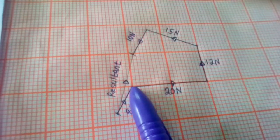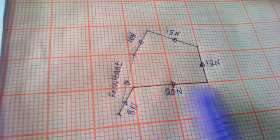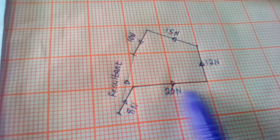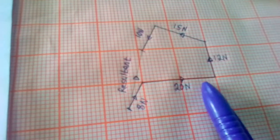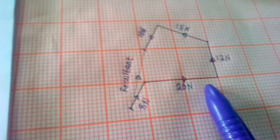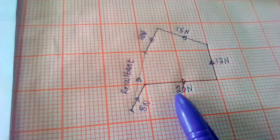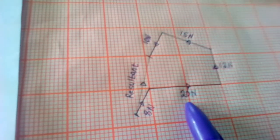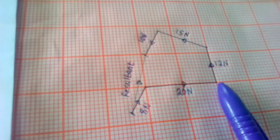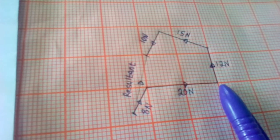You choose a starting point, then you measure 4 cm, since our 20 Newton is 4 cm. From the starting point to the other end, you have it to be 4 cm with your ruler. Then you label it 20 Newton.